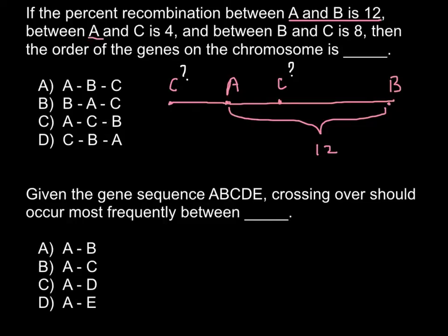Here is the distance between A and C. We just have two options. And between B and C the distance is 8. Here is the distance 4. As you see, 12 minus 4 is 8.